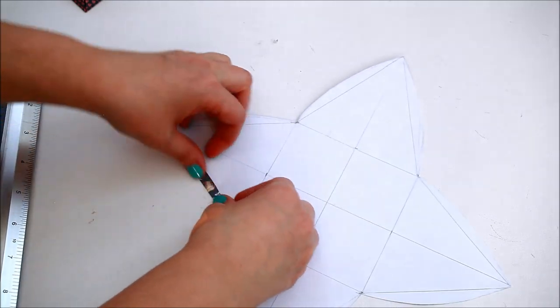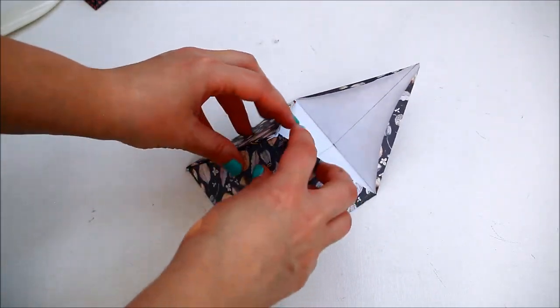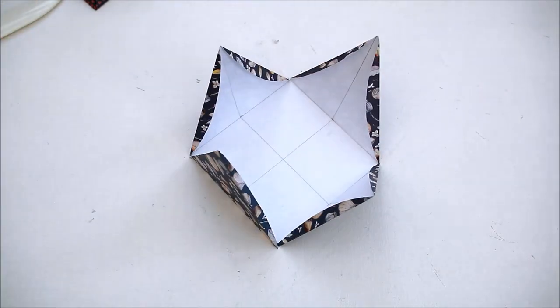Fold and burnish all the scored lines. If you fold all the flaps you'll see our box is taking shape already.